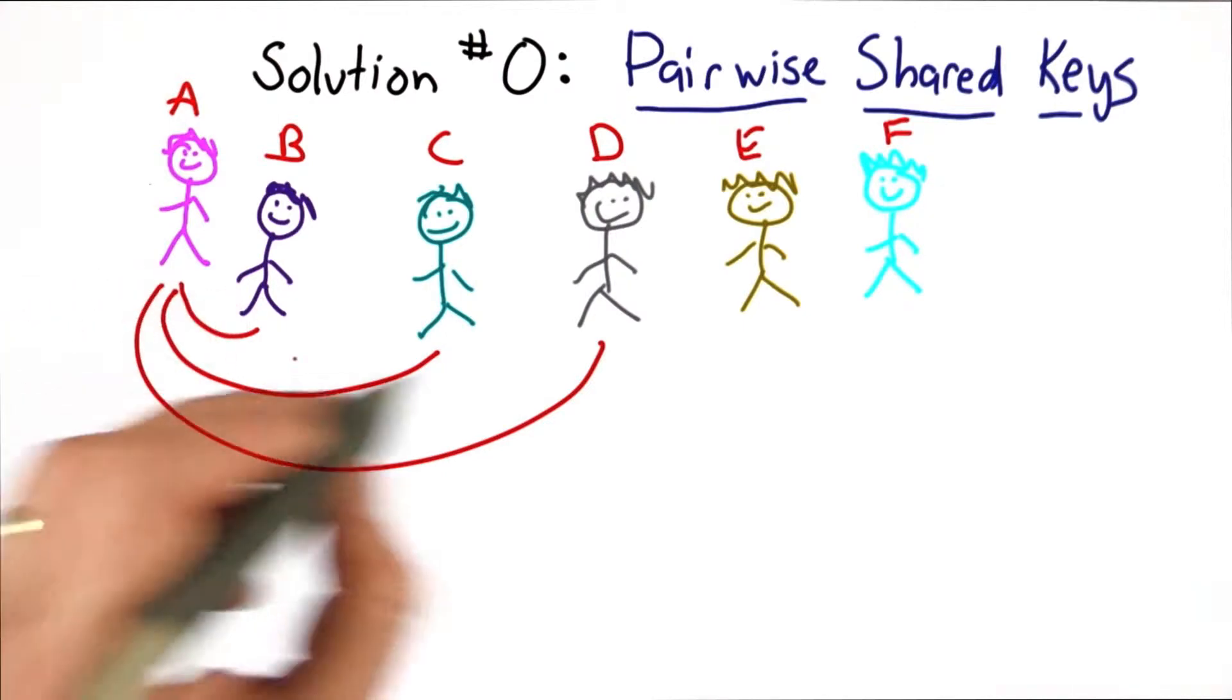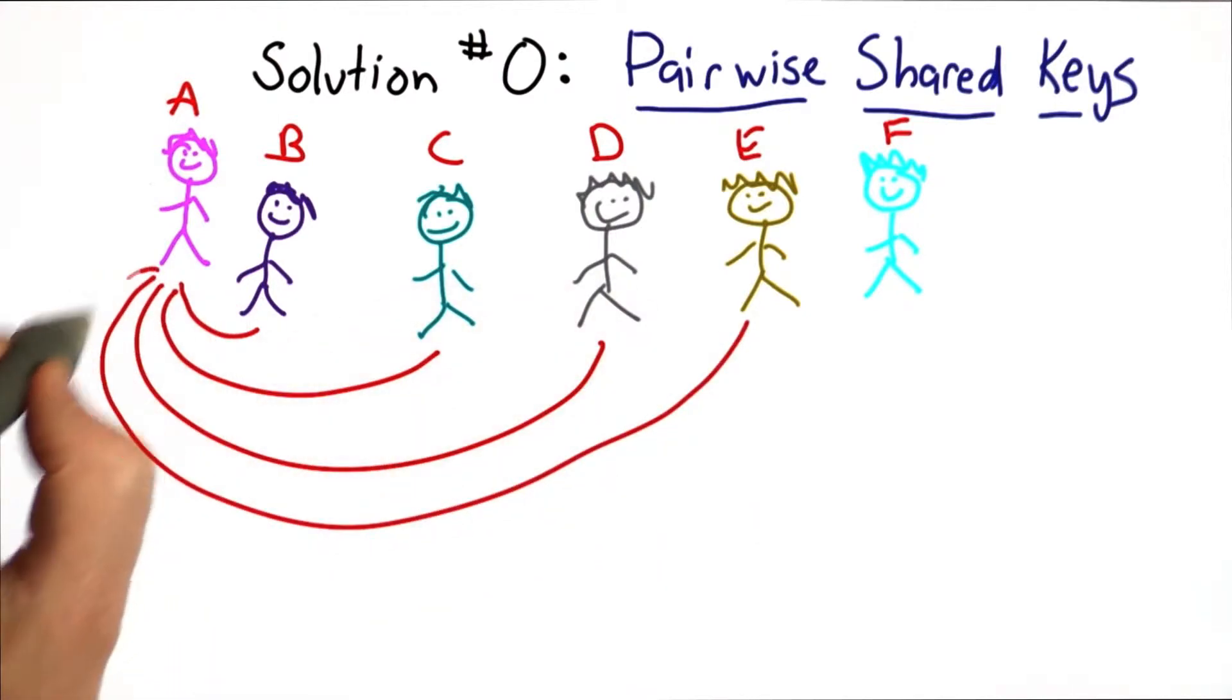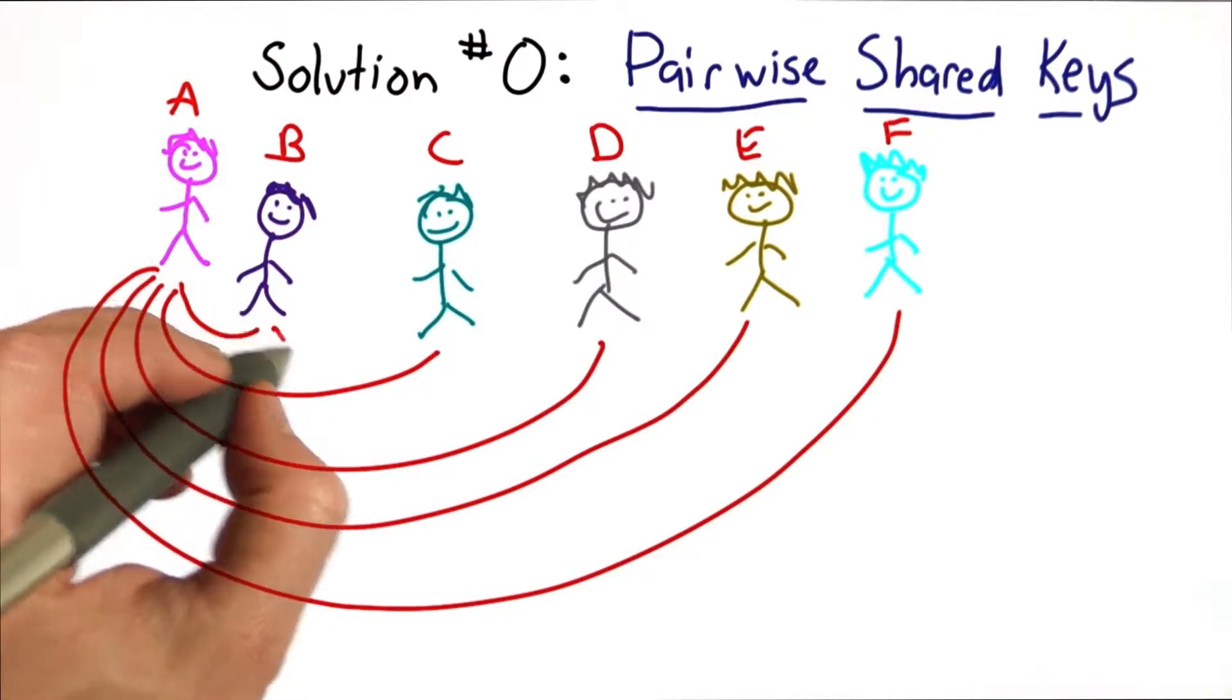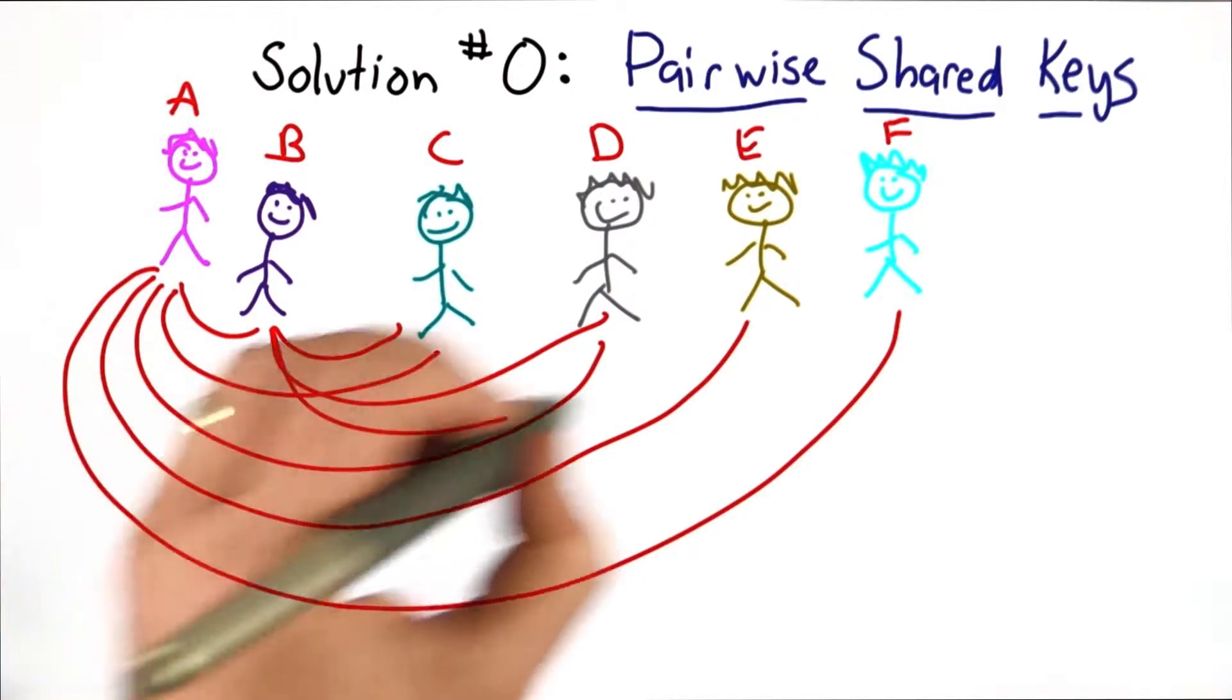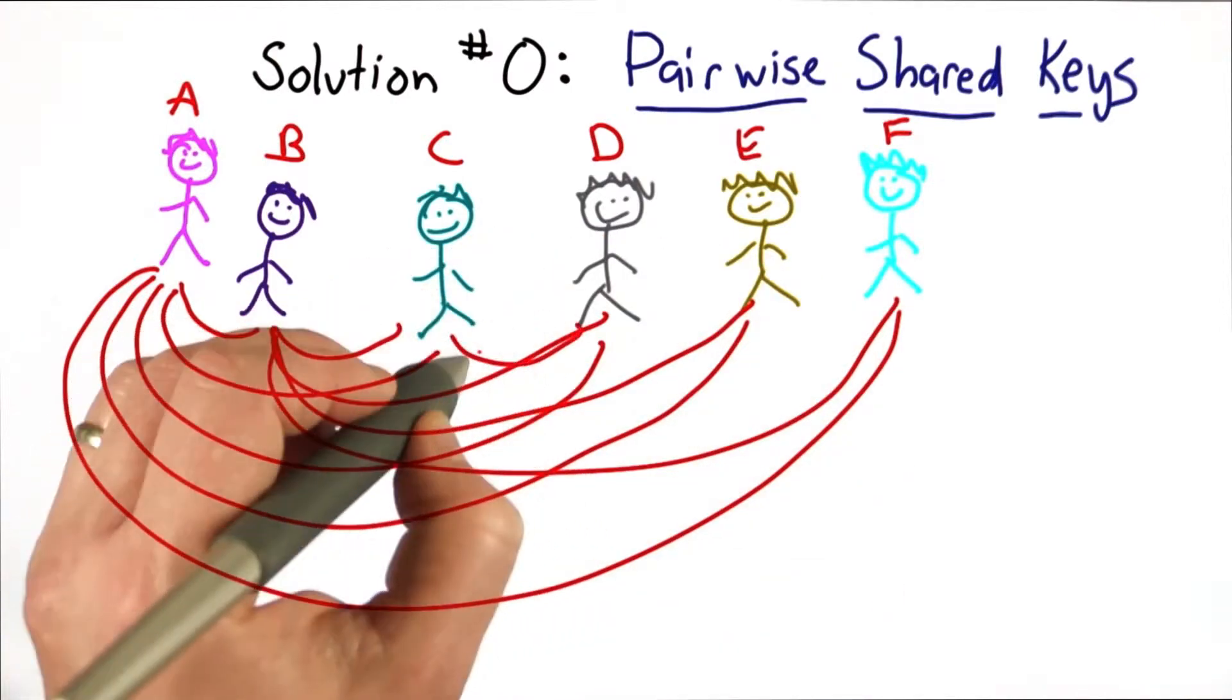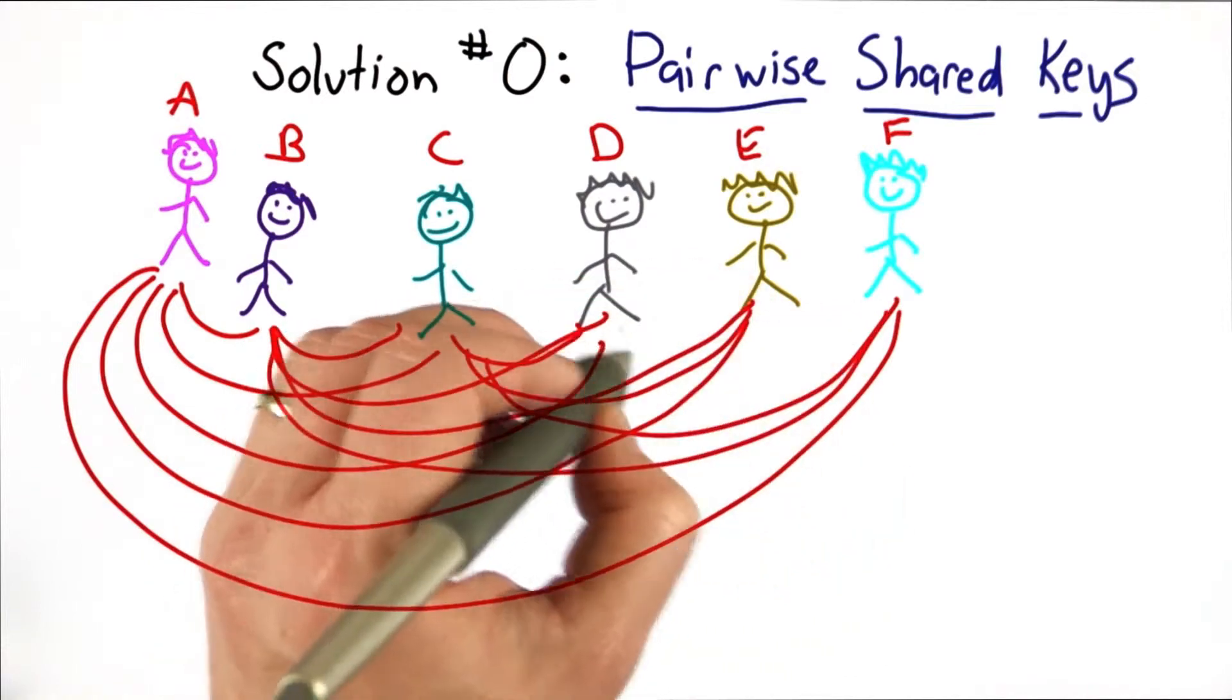And Alice would set up a pairwise shared key, secretly communicating with each of the other people. Bob has a shared key with Alice, Bob would find a shared key with all the other people that he might want to communicate with, and Colleen needs to find a shared key with the remaining people, and so forth.